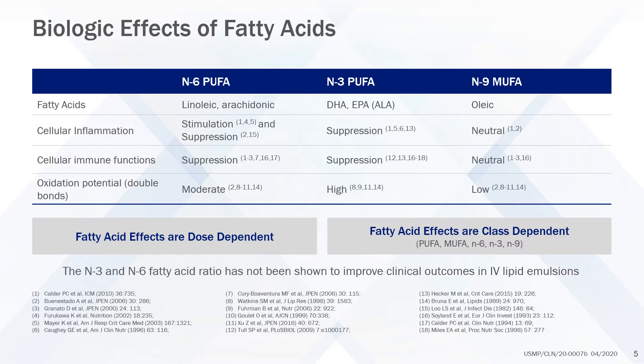N3 PUFAs, rich in fish oil, suppress both inflammation and cellular immunity. In contrast, N9 MUFAs, rich in olive oil, have much smaller effects upon inflammation and cellular immunity and are considered neutral.